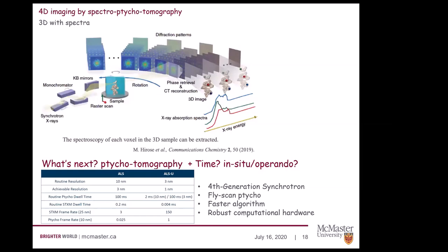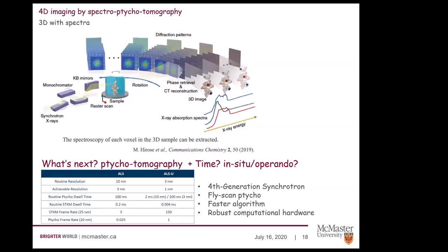Looking to the future: with fourth-generation synchrotron sources, more coherent beam sources will be available. The ALS is upgrading to ALS-U, and the expected capability of the new ptychography STXM is much more powerful, enabling faster image capture. Combined with development of fly-scan ptychography, faster algorithms, and robust computational hardware, soft X-ray ptychography will enable in-situ experimental analysis such as electrochemistry studies in the future.